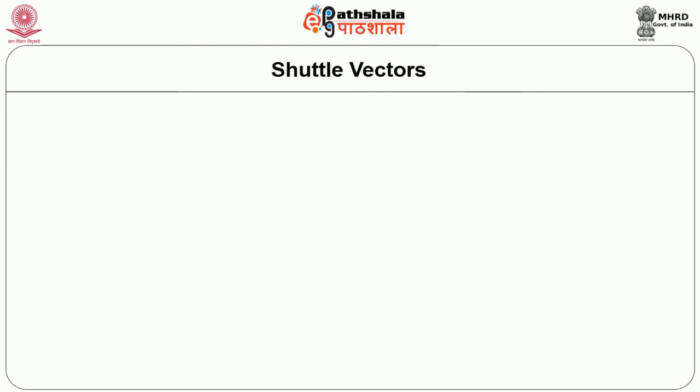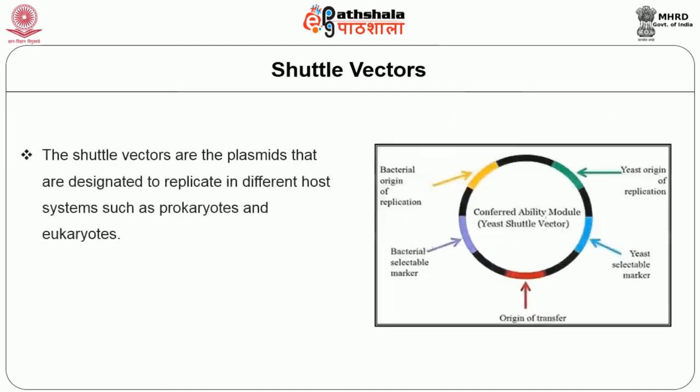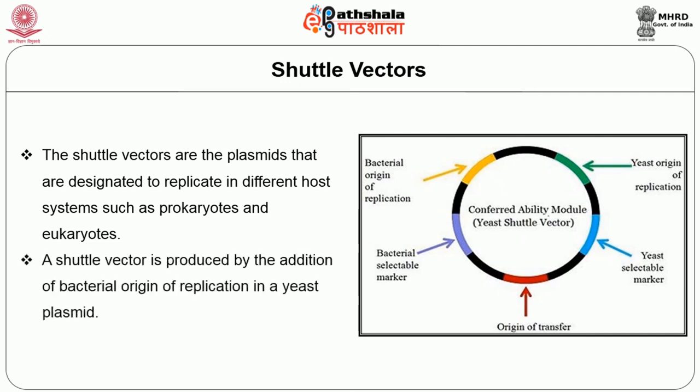Coming to shuttle vectors: shuttle vectors are plasmids designated to replicate in different host systems, such as prokaryotes and eukaryotes. A shuttle vector is produced by the addition of a bacterial origin of replication into a yeast plasmid.